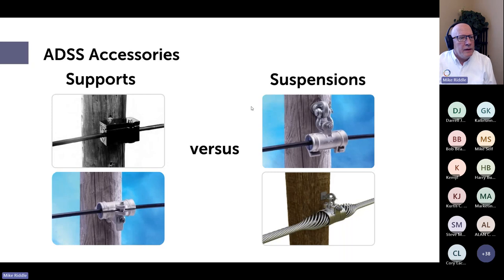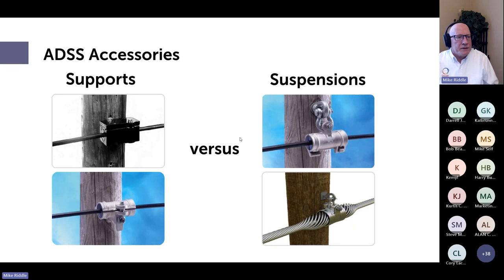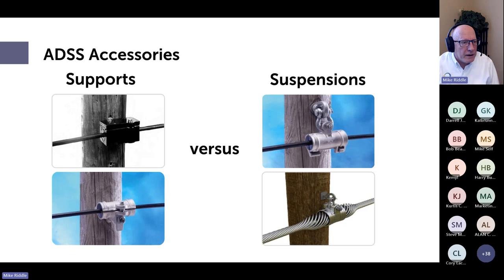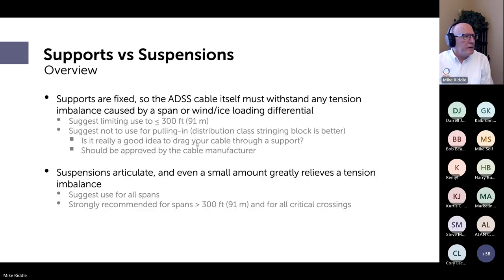For example, if one span is 1,000 feet and the adjacent span is 100 feet, you have a significant tension imbalance — more vertical load from the cable plus greater tension under wind and ice conditions. A suspension only needs to move a little bit to equalize that tension. With a fixed support, the cable must endure that imbalance with no relief — nothing good can come from that. I suggest limiting supports to spans of 300 feet or less.